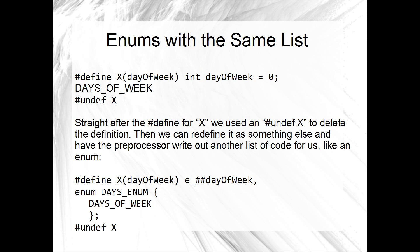What's really cool is then we could undef X — undefine the X macro — and define it as something else. Straight after the define for X, we undef X so the preprocessor completely forgets what X means, and we could define it as something else. So we might want to write out enums, just like our earlier example: define X(day_of_week) as E_##day_of_week — using the concatenation operator. Then something like enum days_enum { DAYS_OF_WEEK }. What's that going to do? It's going to call DAYS_OF_WEEK, and DAYS_OF_WEEK calls X(day_of_week) seven times, and X(day_of_week) expands to E_##day_of_week. So we're going to get enum days_enum with E_Monday, E_Tuesday, E_Wednesday, etc. — we get the enum we want. Don't forget to undef X at the end.